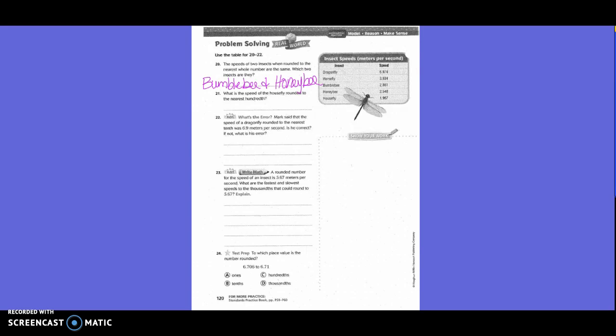What is the speed of the housefly rounded to the nearest hundredth? We'd circle what's in the hundredths spot — 6 — and underline the 7. Rewrite 1.9 because that's to the left of our circle, and then is that going to become a 6 or a 7? A 7, because 7 is 5 or higher.